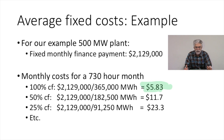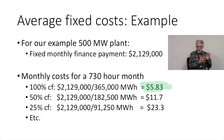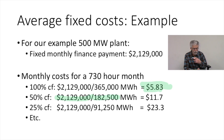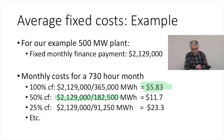If we reduce the capacity factor to only 50%, we immediately know average fixed costs are going to go up. We take our $2,129,000 and divide it by the new generation at 50% capacity, which is about 182,000–183,000 megawatt hours, and we get an average fixed cost of $11.70 per megawatt hour.